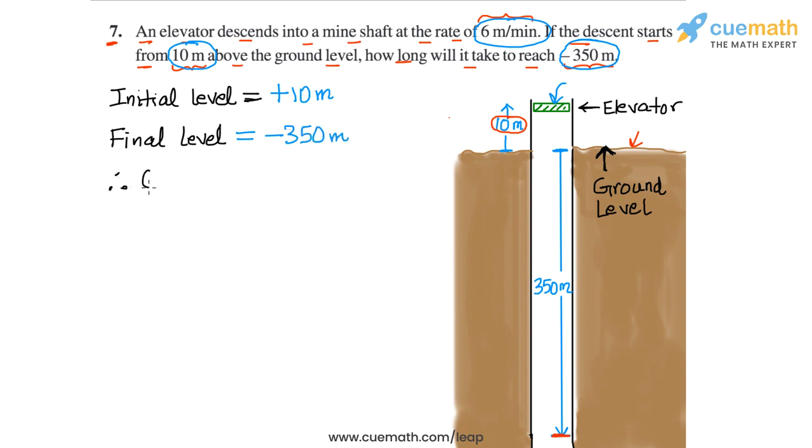From these two numbers, the change in the elevator's level from initial to final will be the final level, which is minus 350 meters, minus the initial level, which is 10 meters. So we are subtracting the initial level from the final level. This will be equal to minus 360 meters.